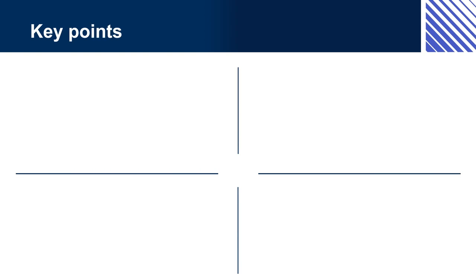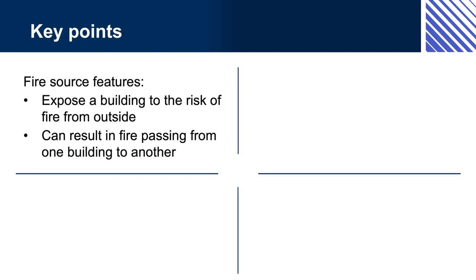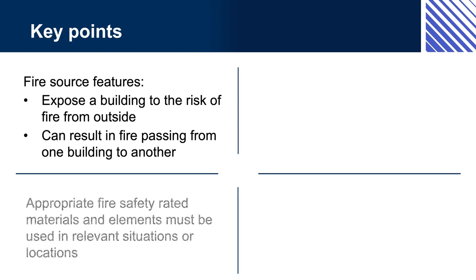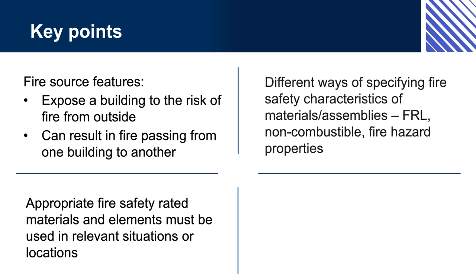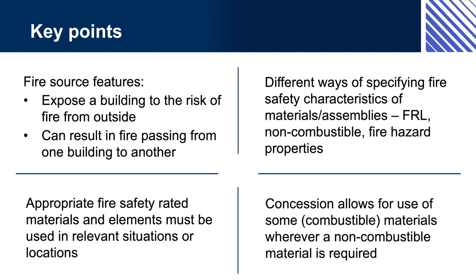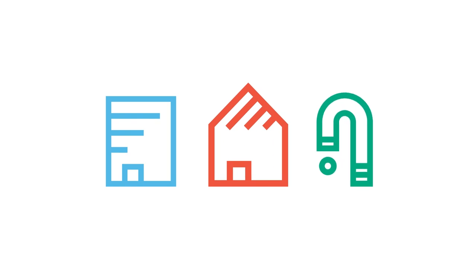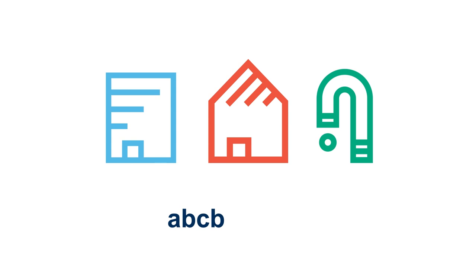Key points. Fire source features expose a building to the risk of fire from outside and can result in fire passing from one building to another. Appropriate fire safety rated materials and elements must be used in relevant situations or locations. Different ways of specifying fire safety characteristics of materials and assemblies include FRL, non-combustible, and fire hazard properties. A concession allows for use of some combustible materials wherever a non-combustible material is required. Thank you for your time — that brings our presentation on understanding fire safety in the NCC to a close. For more information, please visit abcb.gov.au.